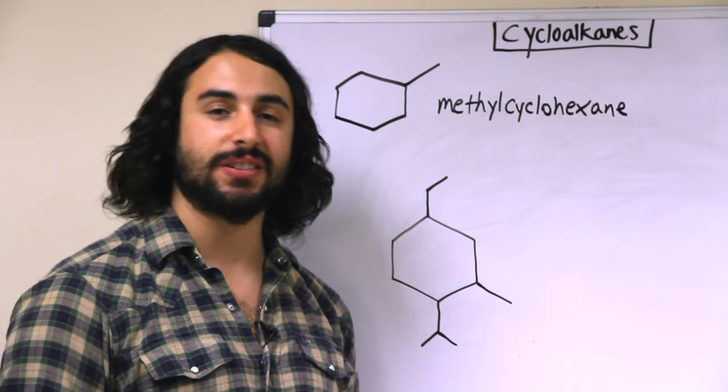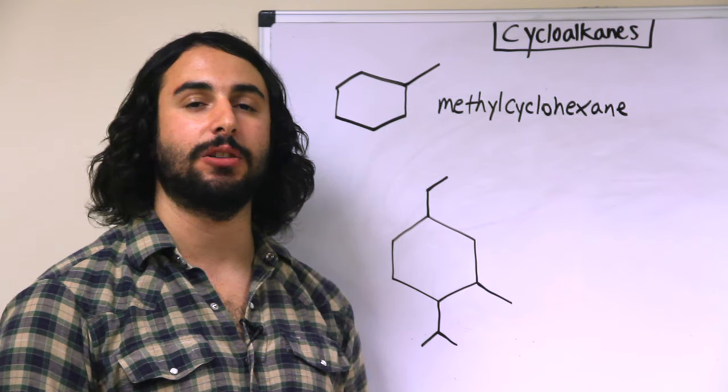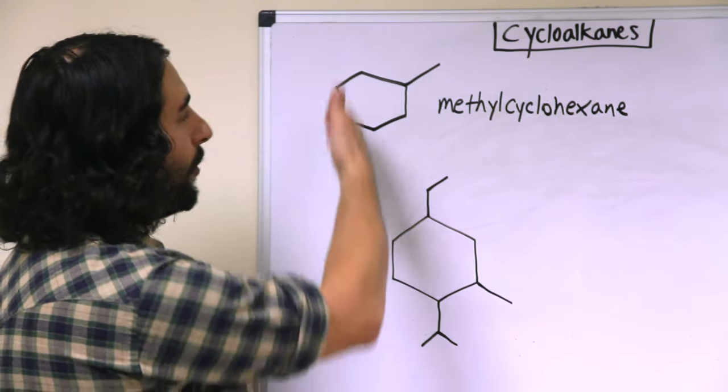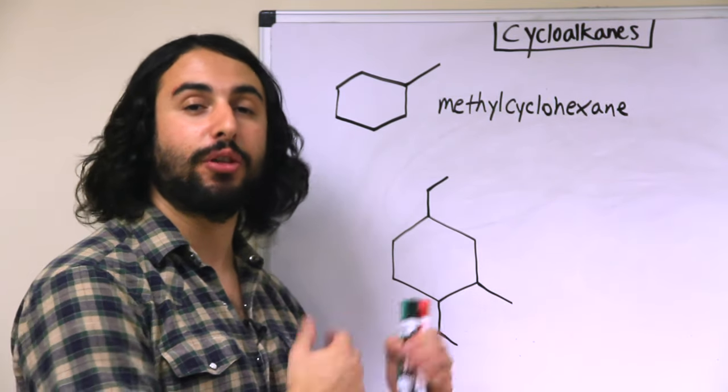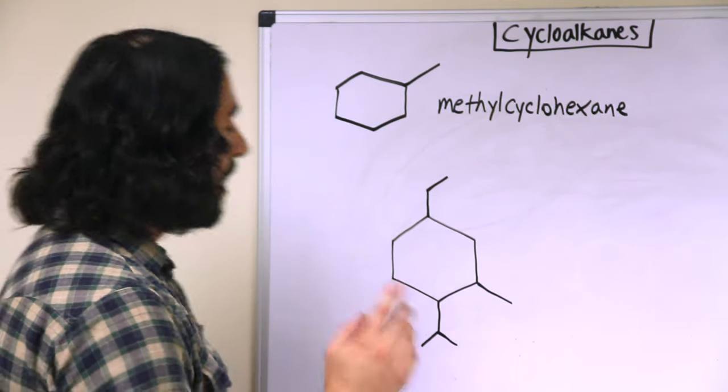it is because all six carbons on the cyclohexane are identical. So this is simply methylcyclohexane. We do not have to indicate the location of the methyl group because if it were on any other carbon we could simply rotate it and it would be the same molecule. So this is methylcyclohexane, that is sufficiently unambiguous. However, when